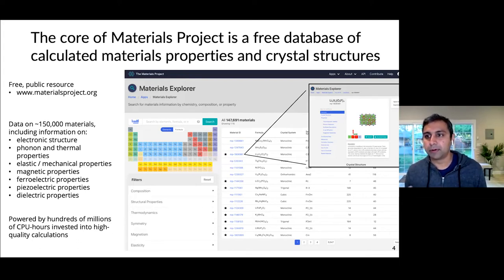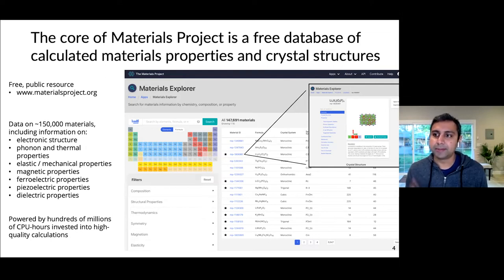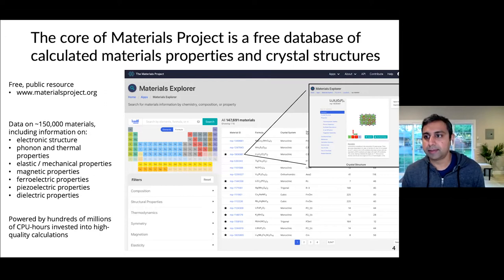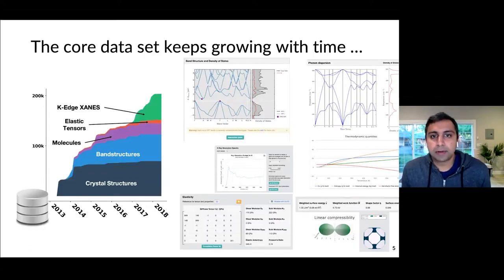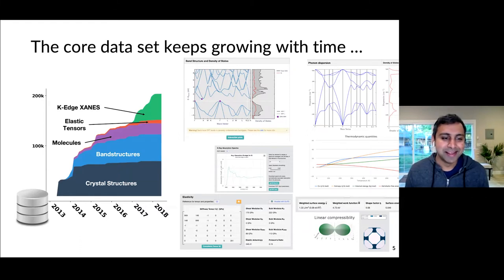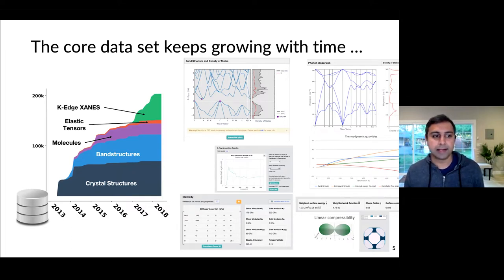There's actually a button on Materials Project where you can request that certain properties be calculated, such as elastic tensors. So if there are certain materials you're particularly interested in, you can click that button and it will automatically prioritize that compound to be calculated. Most of the Materials Project is really calculated data, powered by hundreds of millions of CPU hours in density functional theory calculations. Both the number of compounds as well as the number of properties per compound — including band structures, elastic tensors, magnetic, and piezoelectric properties — is increasing with time.